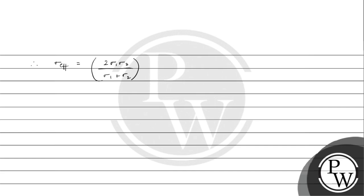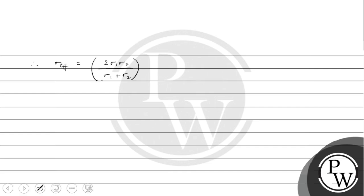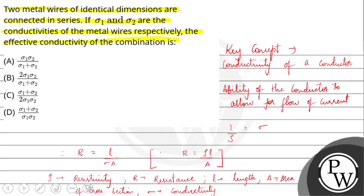Going back to the question to mark the correct option: the effective conductivity of the combination is 2σ1σ2 divided by σ1 plus σ2. The correct option is option B. Hope you have understood it well. Best of luck.